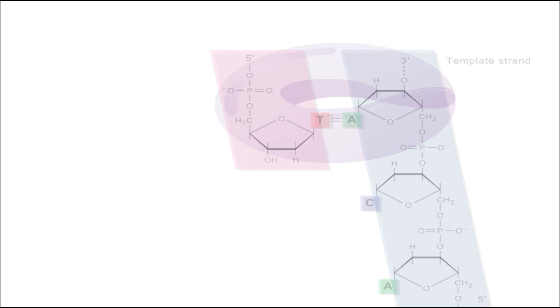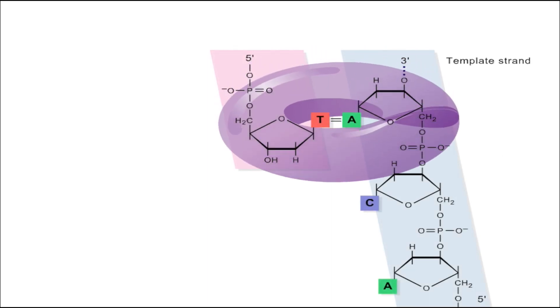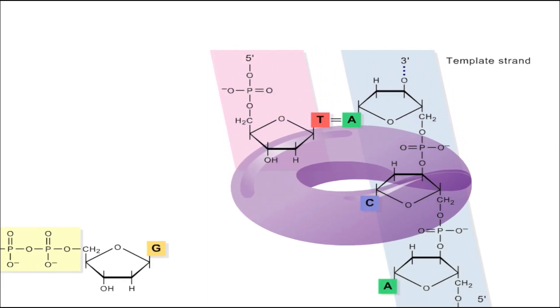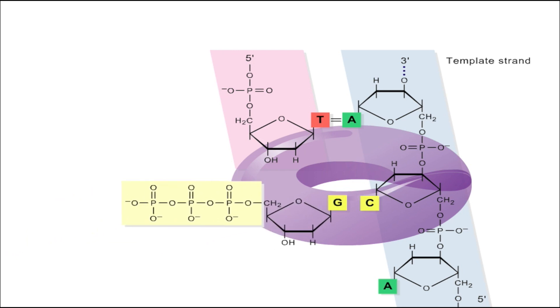Synthesis begins at the three-prime end of a template strand. An enzyme known as DNA polymerase selects the precursor nucleotide that can form a complementary base pair with the nucleotide on the template strand.